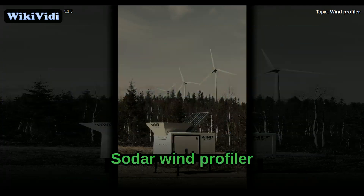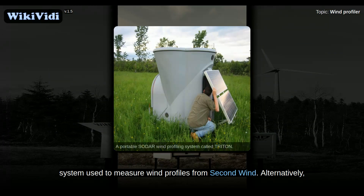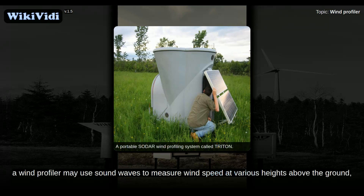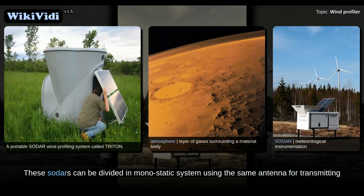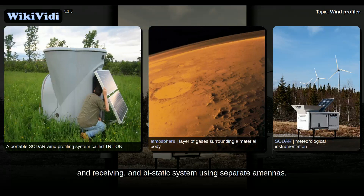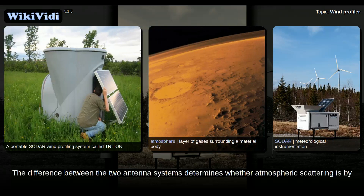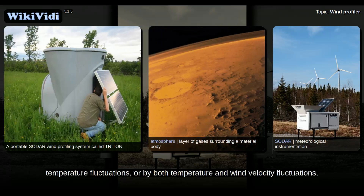SODA Wind Profiler. Alternatively, a wind profiler may use sound waves to measure wind speed at various heights above the ground and the thermodynamic structure of the lower layer of the atmosphere. These SODAs can be divided into monostatic systems, using the same antenna for transmitting and receiving, and bistatic systems using separate antennas. The difference between the two antenna systems determines whether atmospheric scattering is by temperature fluctuations, or by both temperature and wind velocity fluctuations.